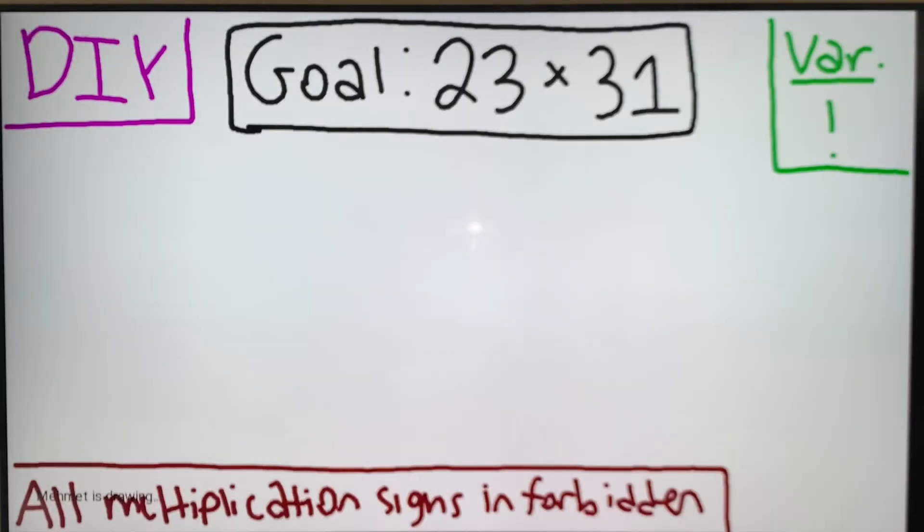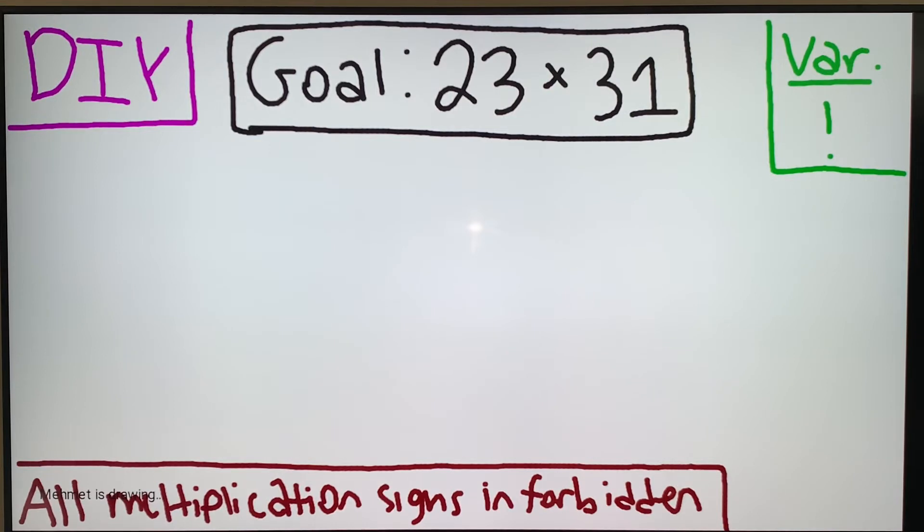Try this DIY example. Do it yourself. The goal is 23 times 31. The variation is factorial. All multiplication signs are forbidden. And ideally, you should come up with a 3 cube solution. Pause the video if needed.